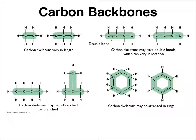Carbon compounds can also be either open structures — this is an open structure because it's got two ends; this one has three ends — or cyclic structures, also called ring structures, that fold back on themselves. These are the basics of carbon backbones, and they can be combined in all sorts of different ways.